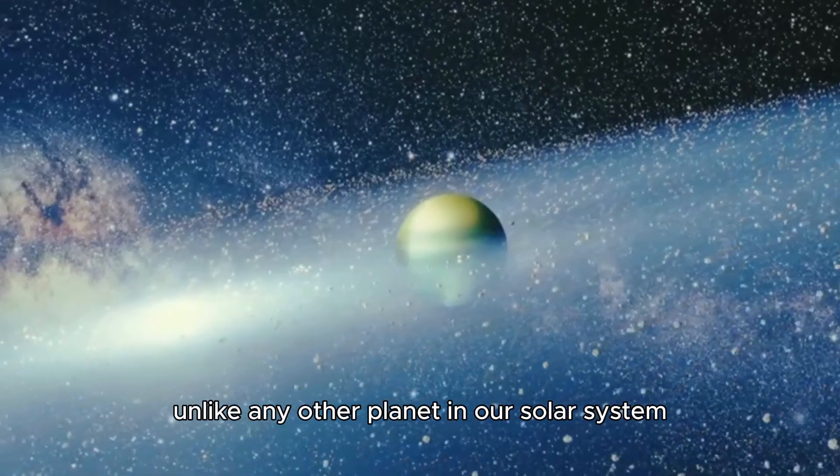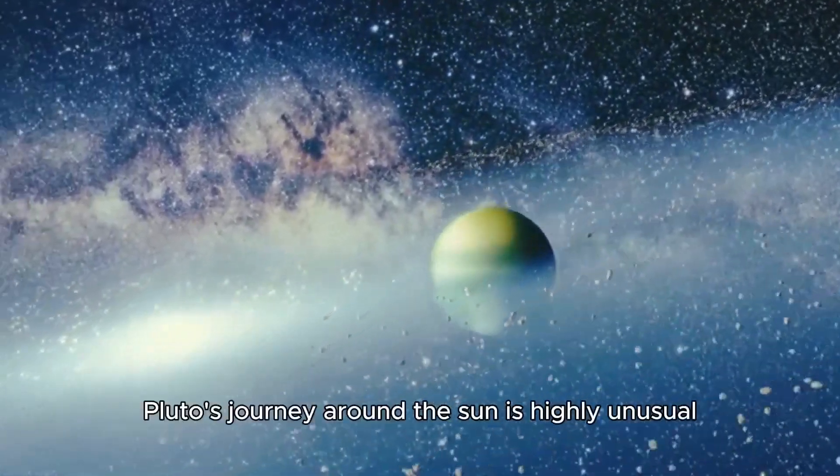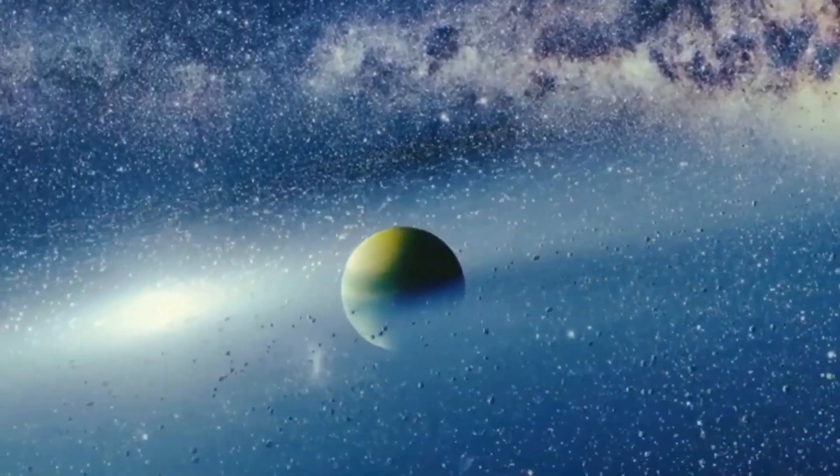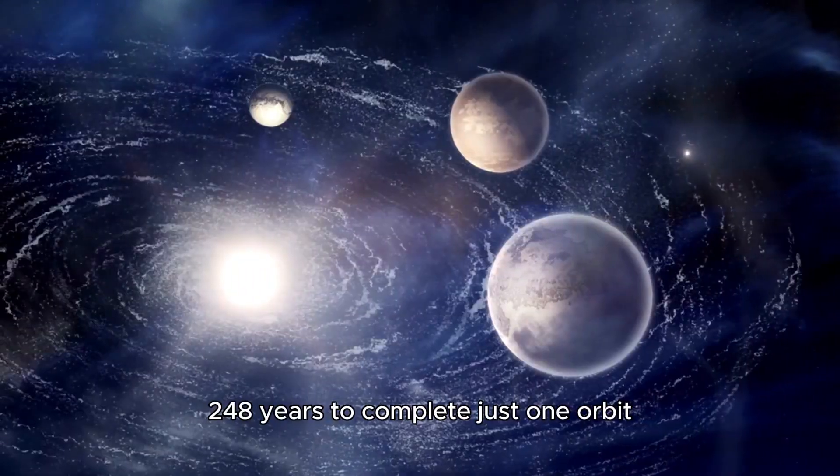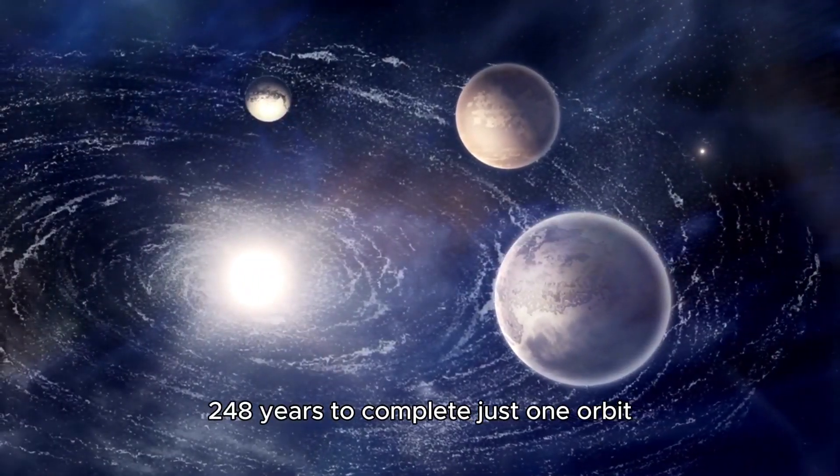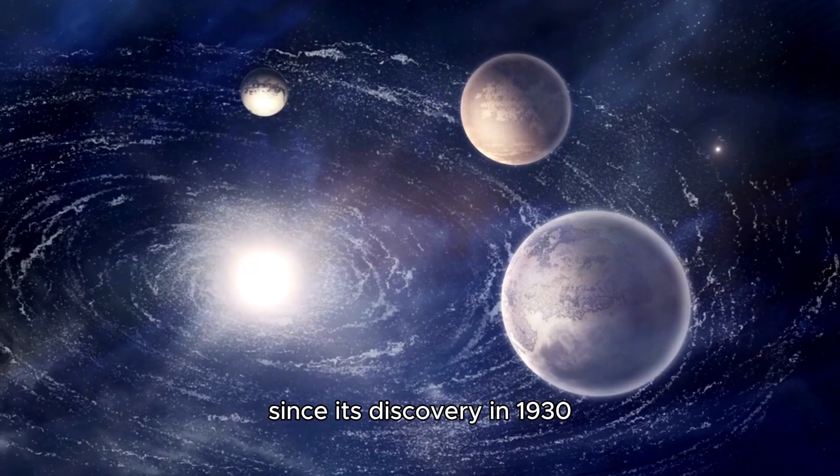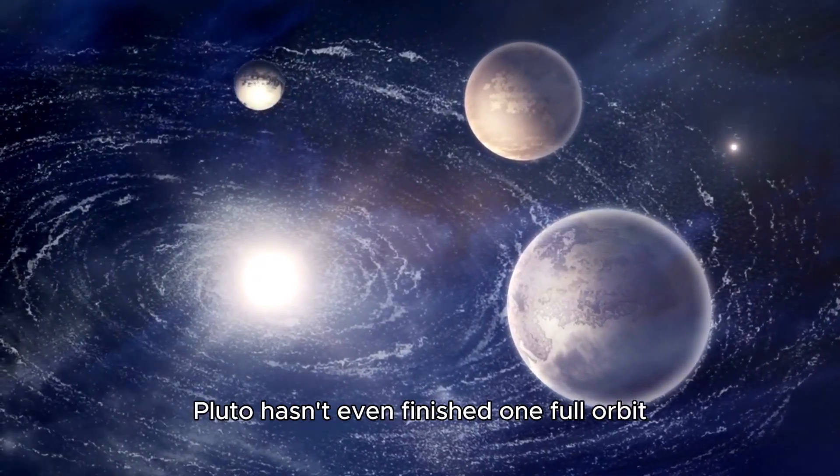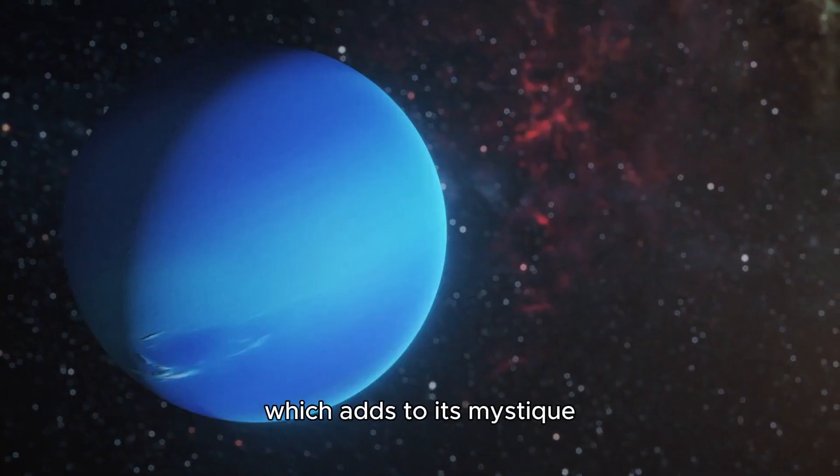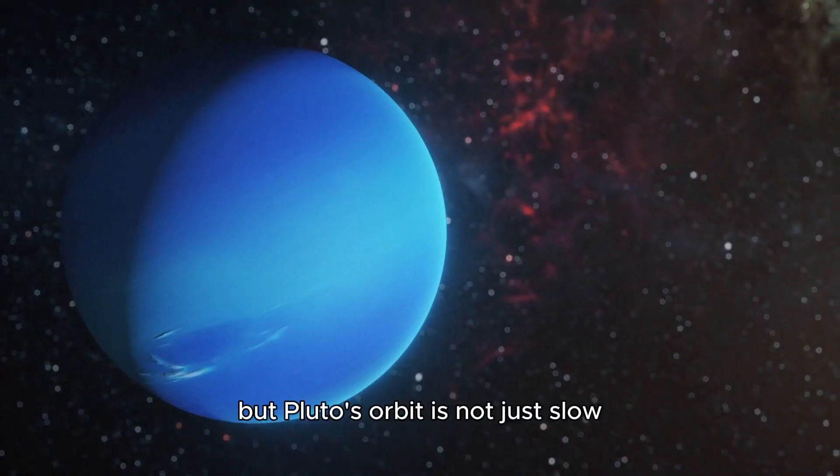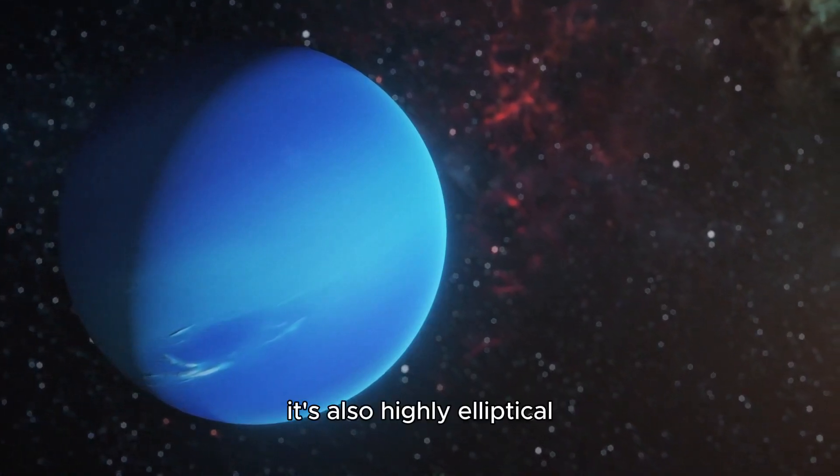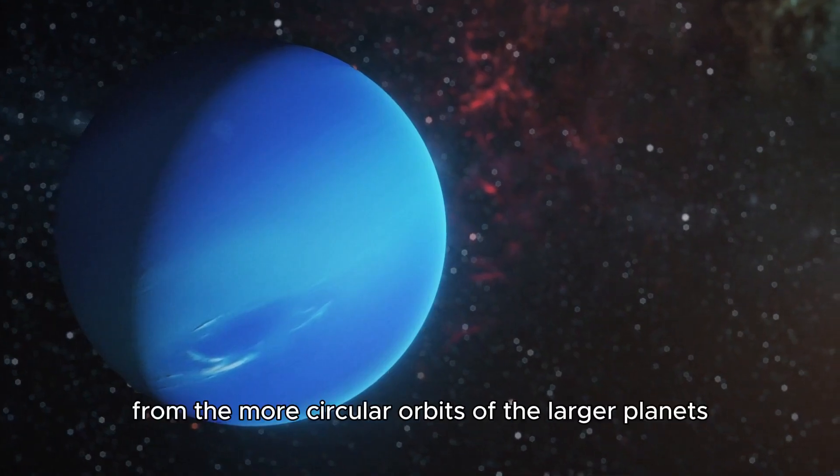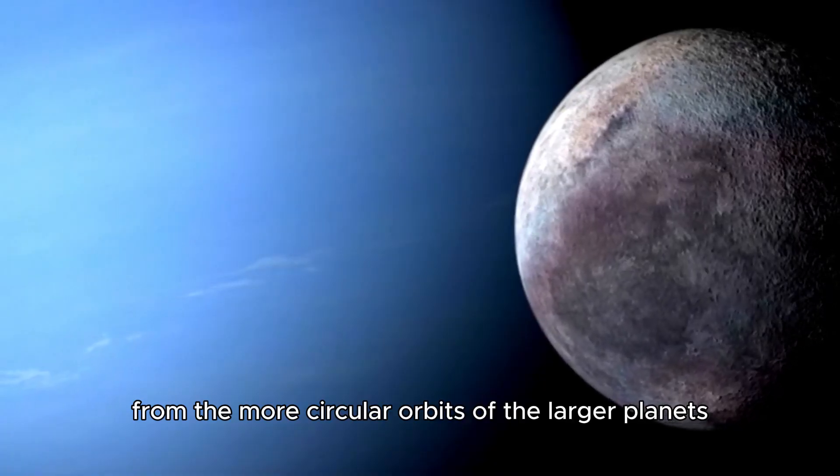Unlike any other planet in our solar system, Pluto's journey around the Sun is highly unusual. It takes a remarkable 248 years to complete just one orbit. Since its discovery in 1930, Pluto hasn't even finished one full orbit, which adds to its mystique. But Pluto's orbit is not just slow—it's also highly elliptical, vastly different from the more circular orbits of the larger planets.